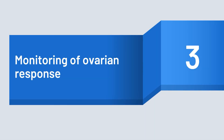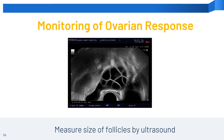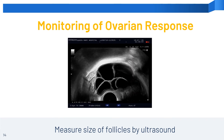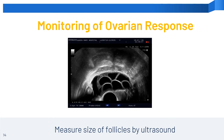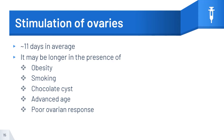Monitoring of ovarian response. This is an ultrasound clip taken during monitoring of ovarian response. You can see that the ovaries are enlarged from stimulation. The size of the follicles are measured by ultrasound. The stimulation of ovaries takes roughly 10 to 12 days on average. It may be different for different women and in some situations may be longer — for example, in the presence of obesity, smoking, chocolate cyst, advanced age, or poor ovarian response.